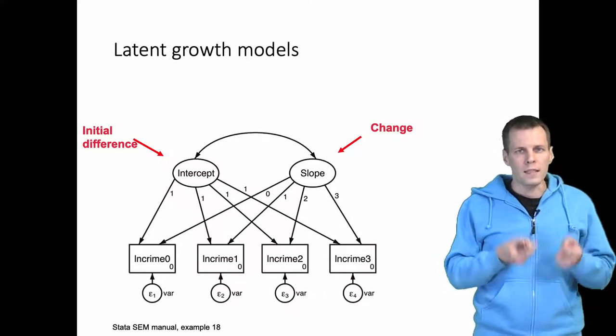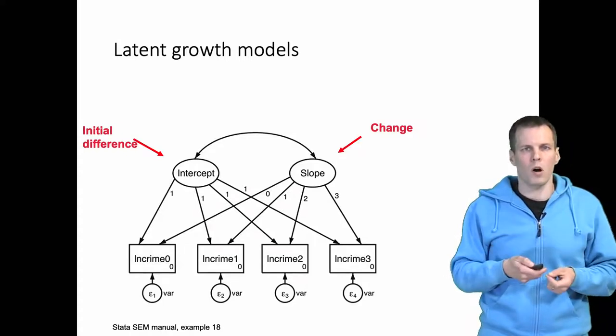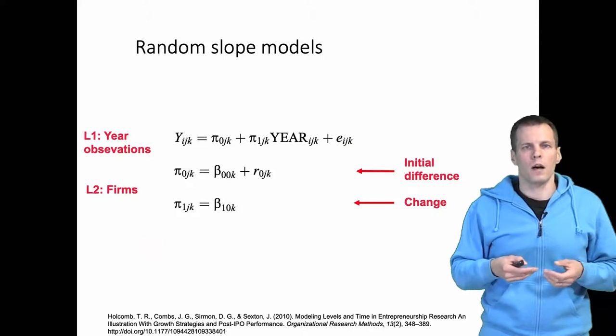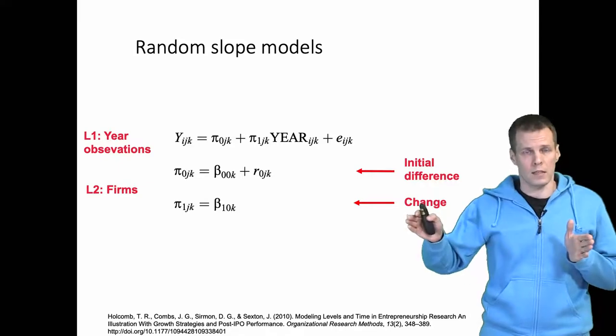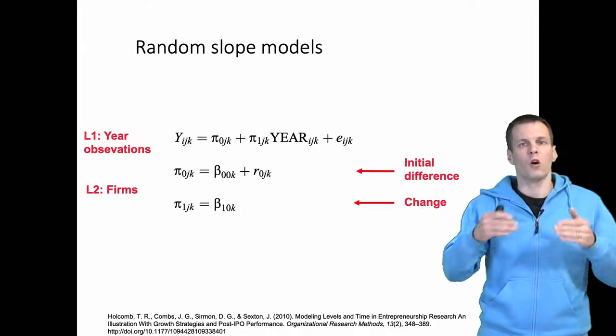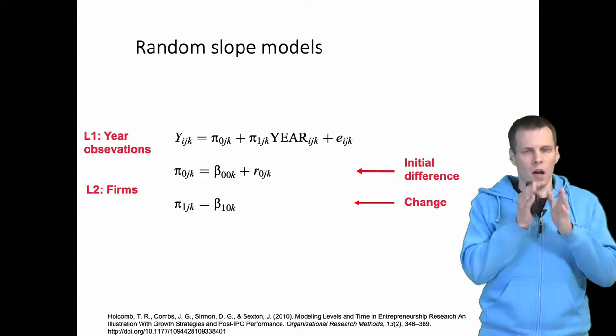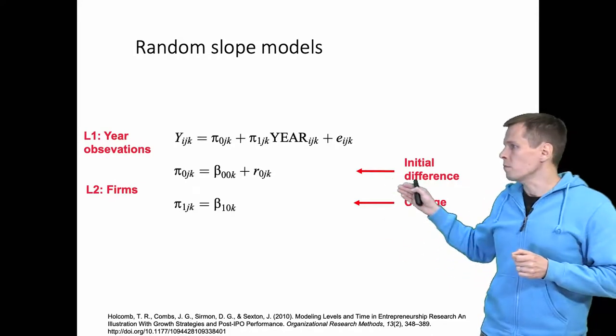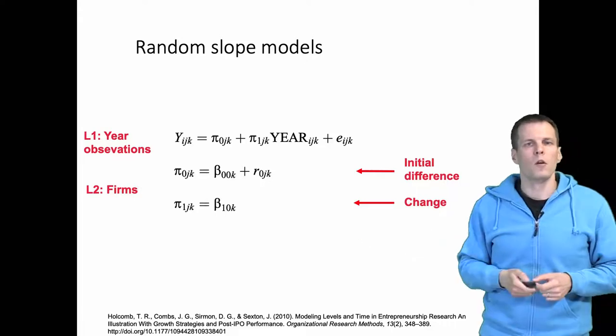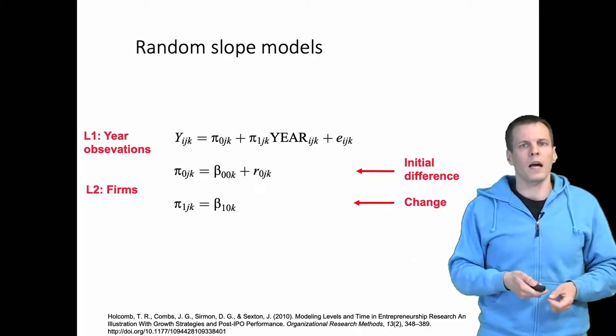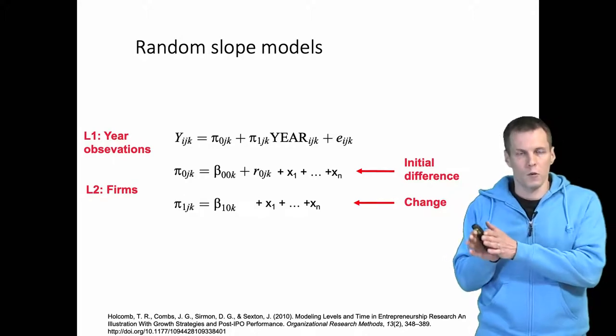We can estimate the exact same model using long form data. So we can estimate the same model using mixed models. The idea of mixed modeling would be that instead of having each observation as a separate variable, we have the observations as different entries in the data set and we have a time index variable. So we would model year observations as a function of initial difference and change over time. We can of course add predictors, x variables that explain the initial differences and explain the different directions of change over time.